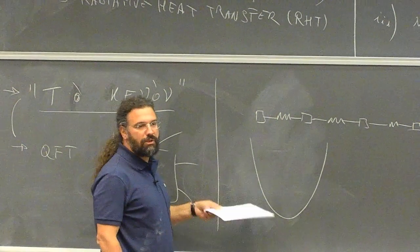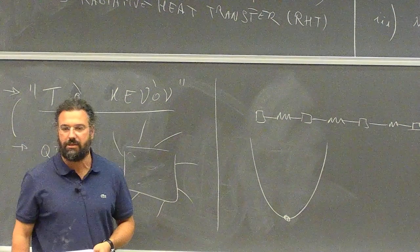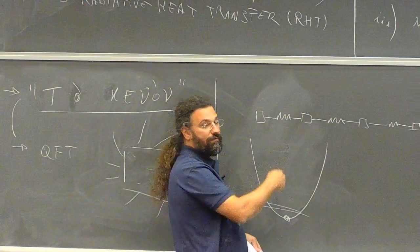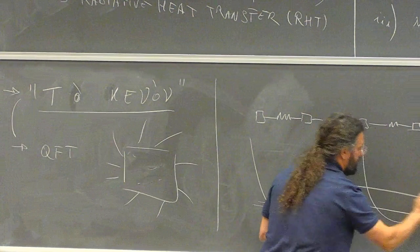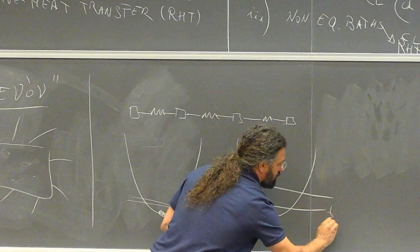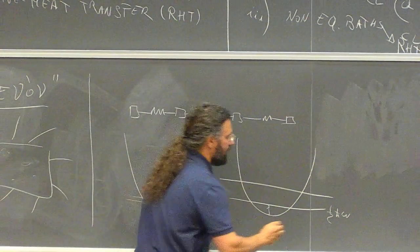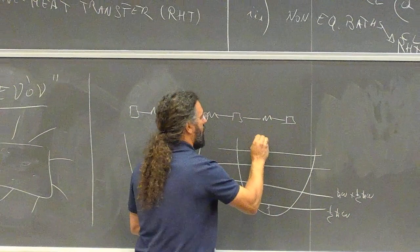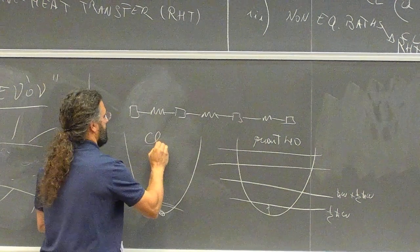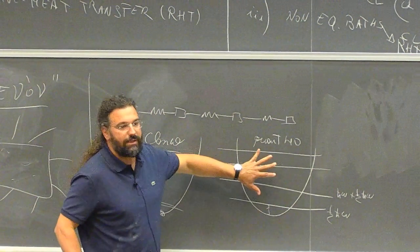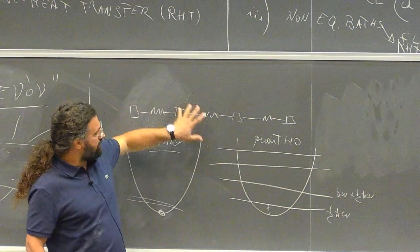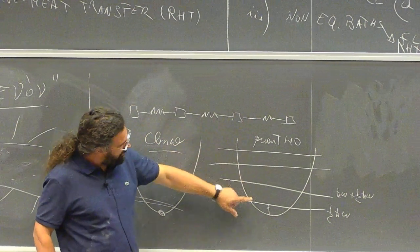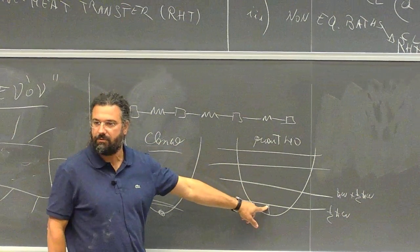The potential for these oscillators is parabolic. In classical physics you can have a particle at rest with zero velocity and fixed position, or any energy you want. But in quantum physics you have quantized modes. The first level has energy one-half ℏω, the second is ℏω plus one-half ℏω, and so on. This is the quantum harmonic oscillator versus the classical one — and the fact that you have quantized energy levels changes everything.